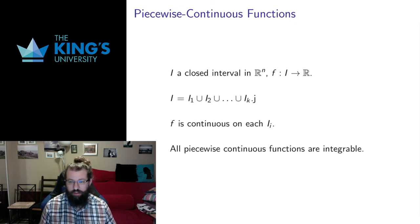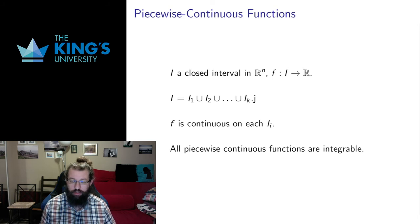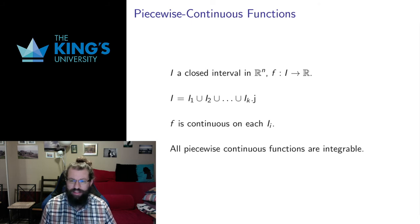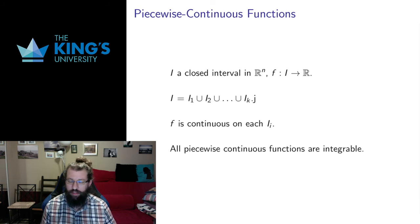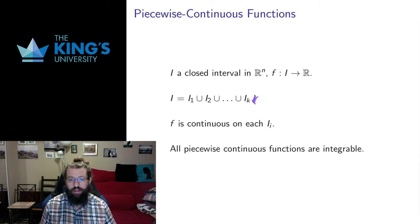I want to talk about what kind of functions can be integrated. The Riemann limit may not always be defined — not all Riemann limits work, and this was true for single-variable functions as well as multivariable functions. Functions where that limit is defined on a certain interval are called integrable functions. I could work with the full category of integrable functions, but there are strange integrable functions that are not terribly reasonable to work with. So I want to work with a slightly smaller but more convenient class: piecewise continuous functions.